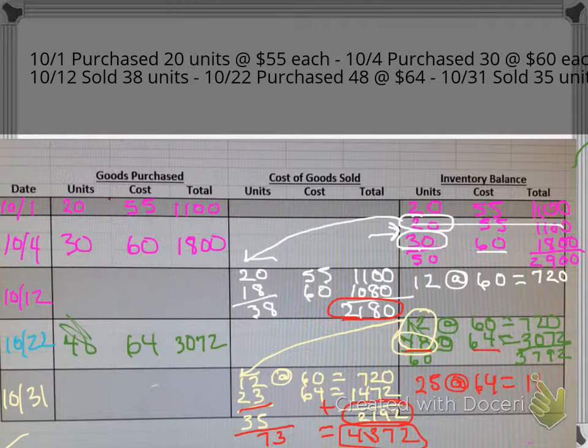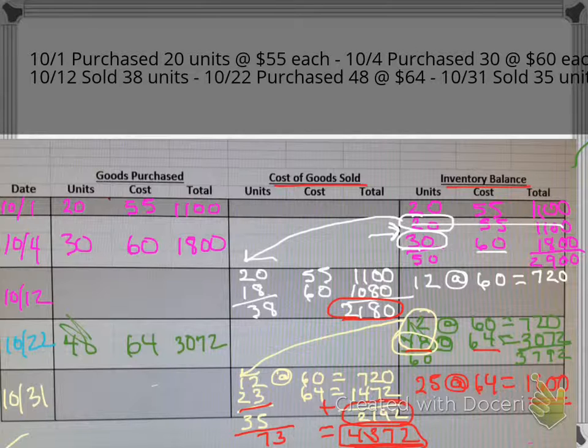Ending inventory is $1,600, and my cost of goods sold is $4,372. You really have to be careful - are they asking you for the cost of goods sold or the ending inventory? I hope that you found this tutorial helpful. Thank you.